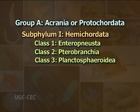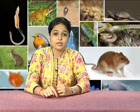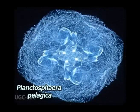Class 3: Planktospheroidea. This class possesses transparent, round and specialized tornaria larva. The representatives of this class possess a U-shaped alimentary canal. Planktosphera pelagica is a representative of this class.